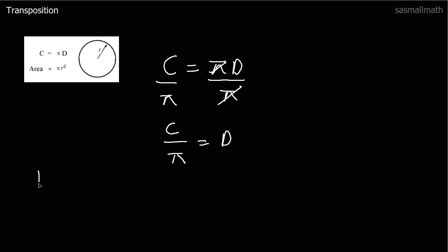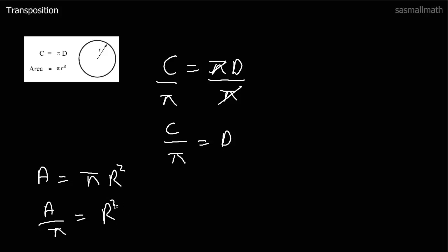Now let's look at area equals pi r squared. The best way to do this is get rid of the pi first, so we divide both sides by pi. So A over pi leaves us with r squared. Then you look at the opposite of squaring something — the opposite is square rooting. If we square root r squared we'll be back to r, and what we do to one side we must do to the other.